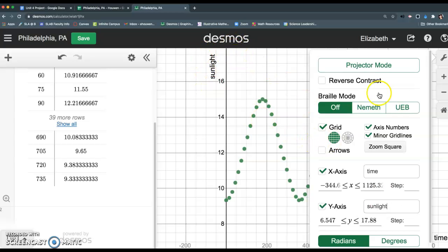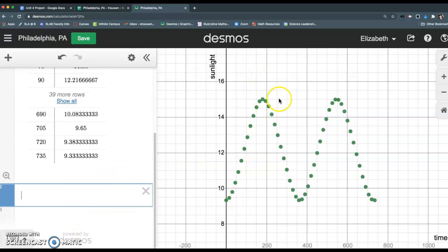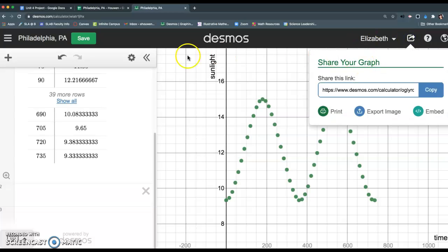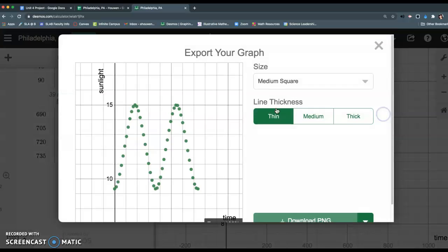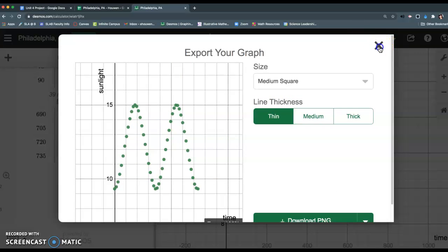You're going to do a lot more work on Desmos writing your equation, checking to make sure it's right and it connects the points. But when you're finished, you can take a screenshot, or Desmos will make these images for you that you can mess with and change to put into your final product.